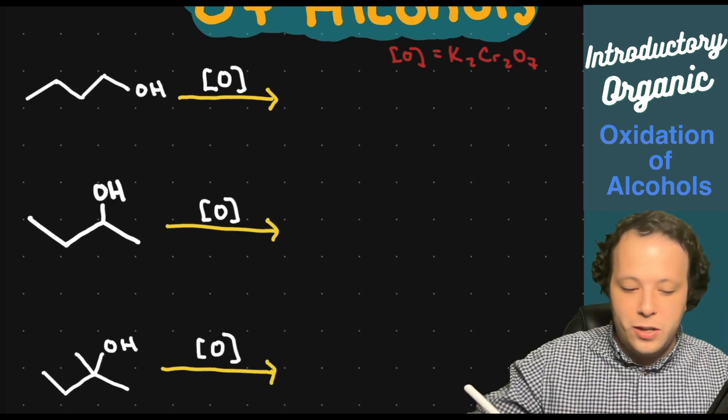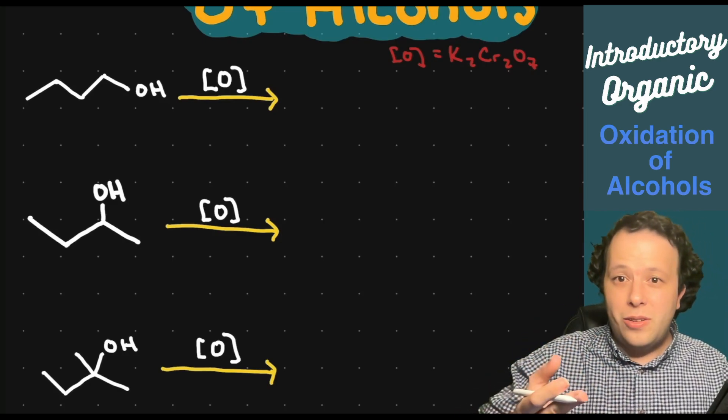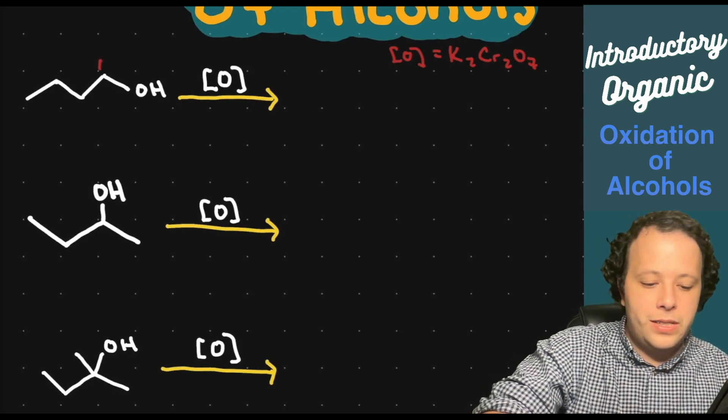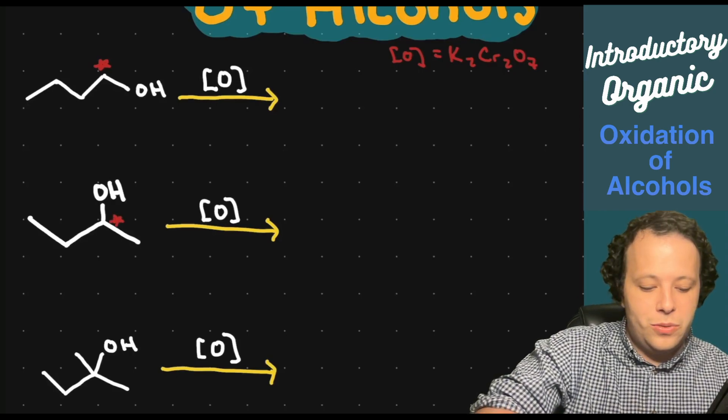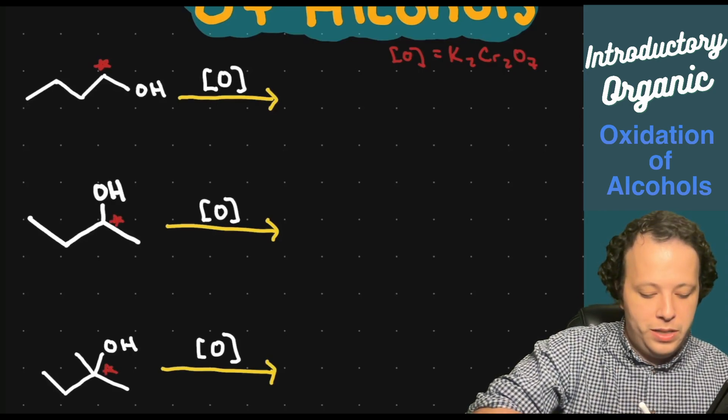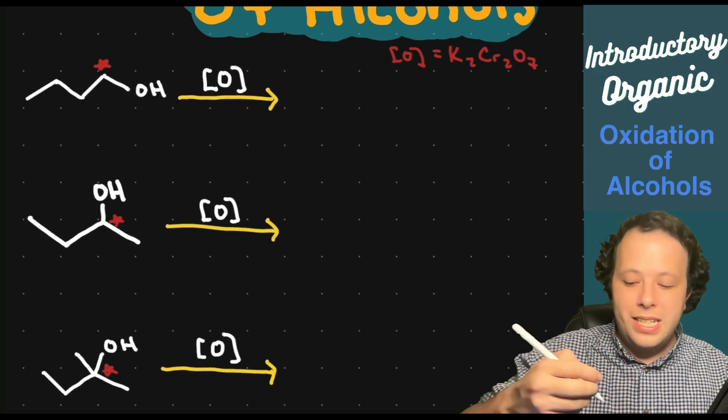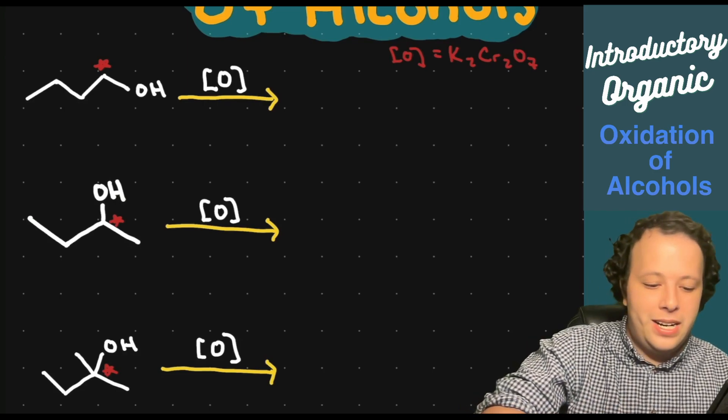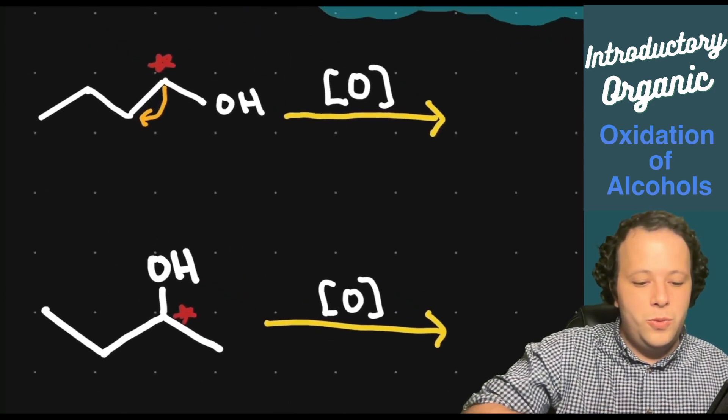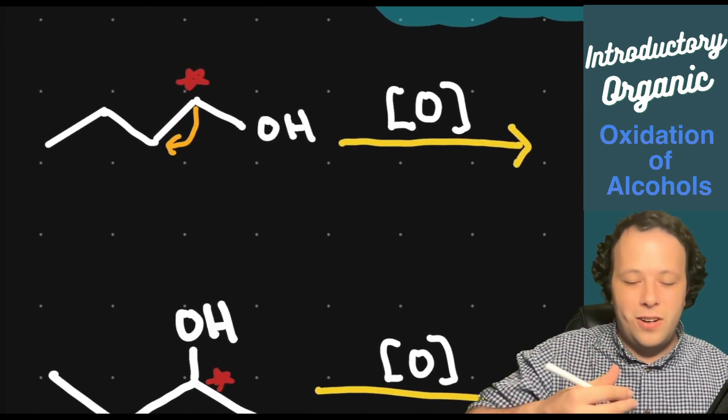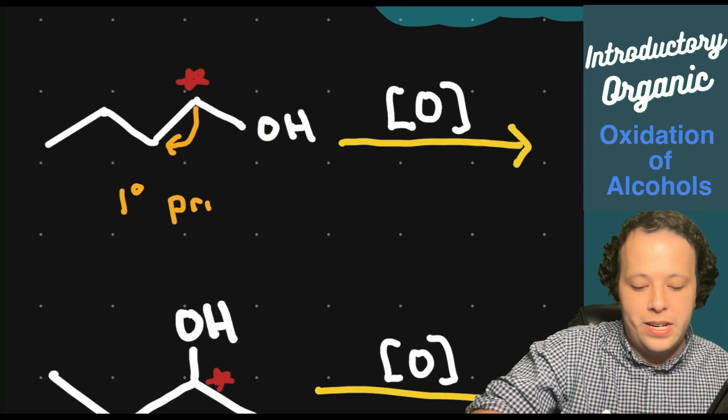How do we classify? We're always going to look at our alcohol or OH group and look at the carbon that is directly next to the OH. I'm going to put a little star next to all those carbons. Now count how many carbons are directly next to it. For this first one we have one carbon next to it, so this is a primary alcohol.